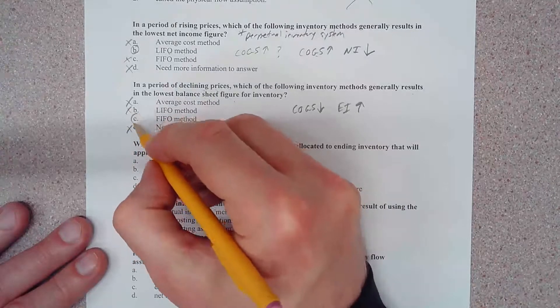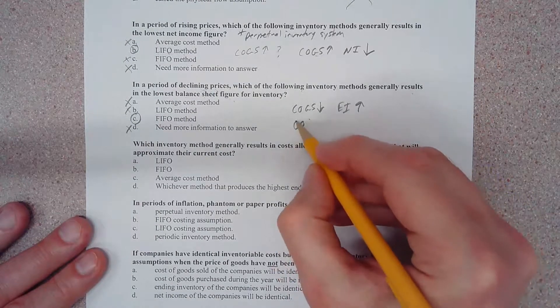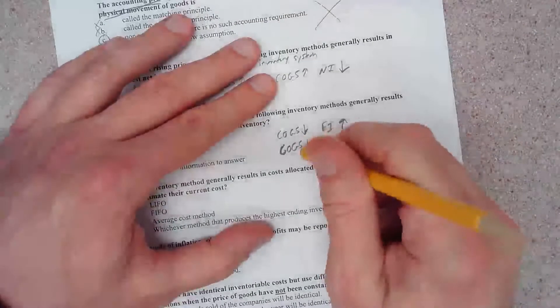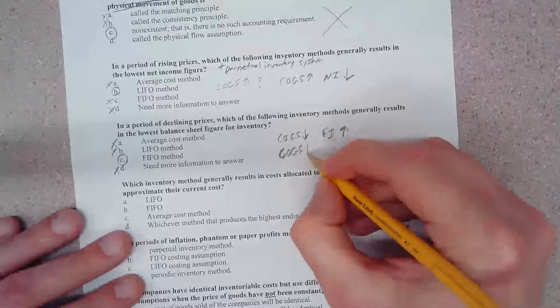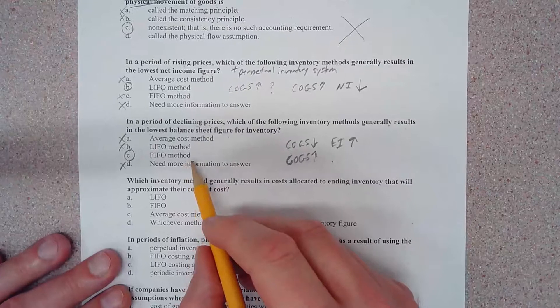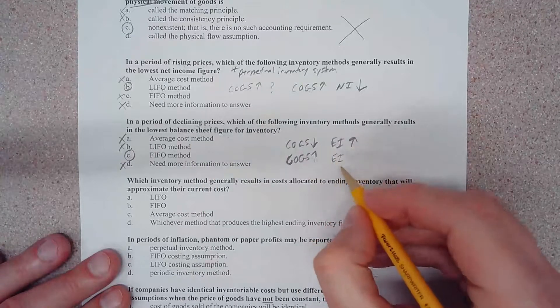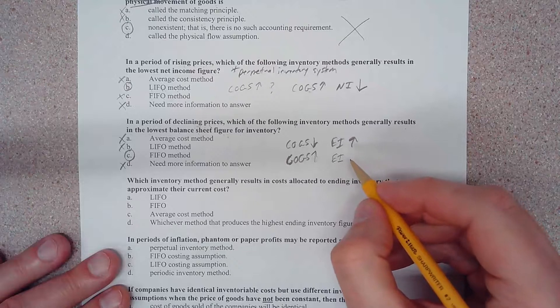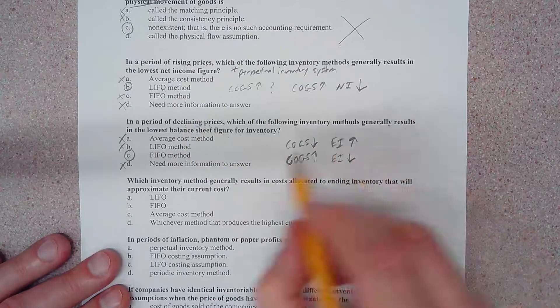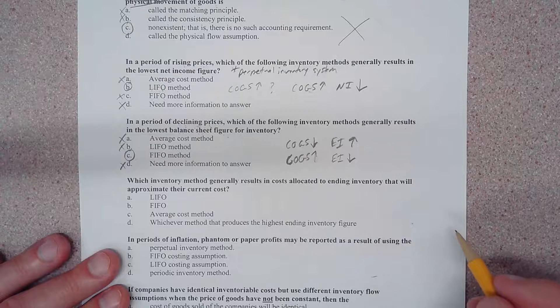So our answer here is FIFO. Cost of goods sold is going up because we're expensing older and more expensive inventory. So what is left at the end of the period is all of this inventory that we purchased at lower prices, so inventory goes down. They're asking for the lowest balance sheet figure. The answer is going to be FIFO. I do apologize for my small mistake.